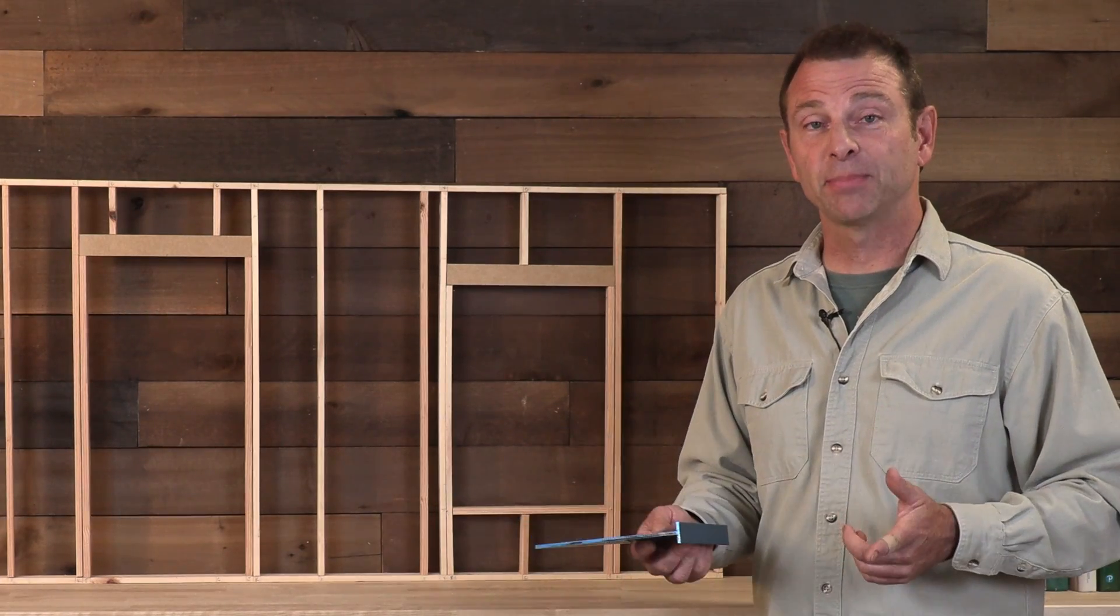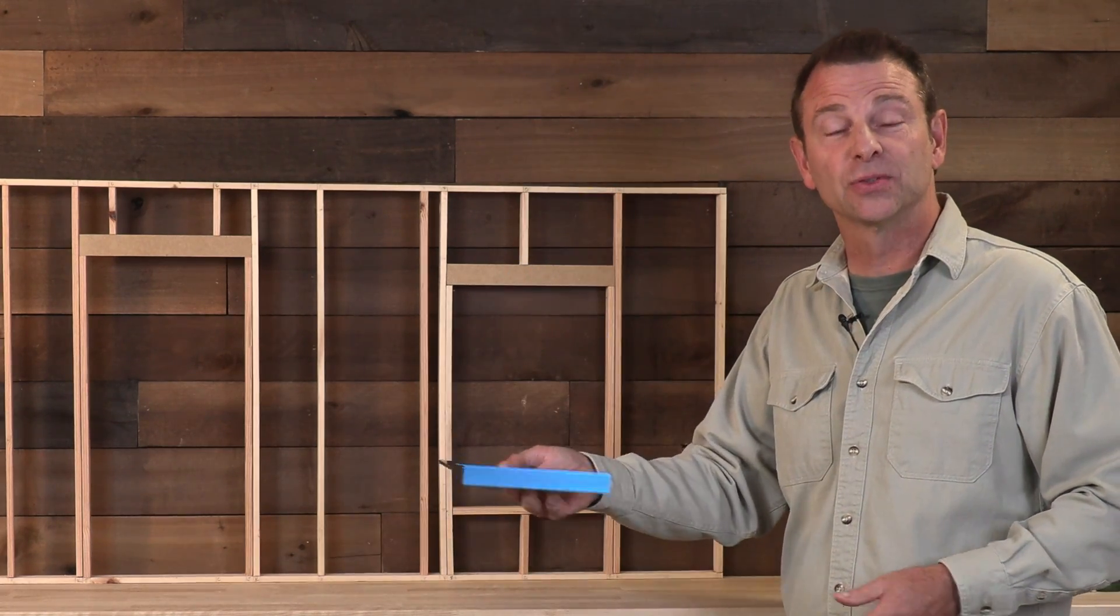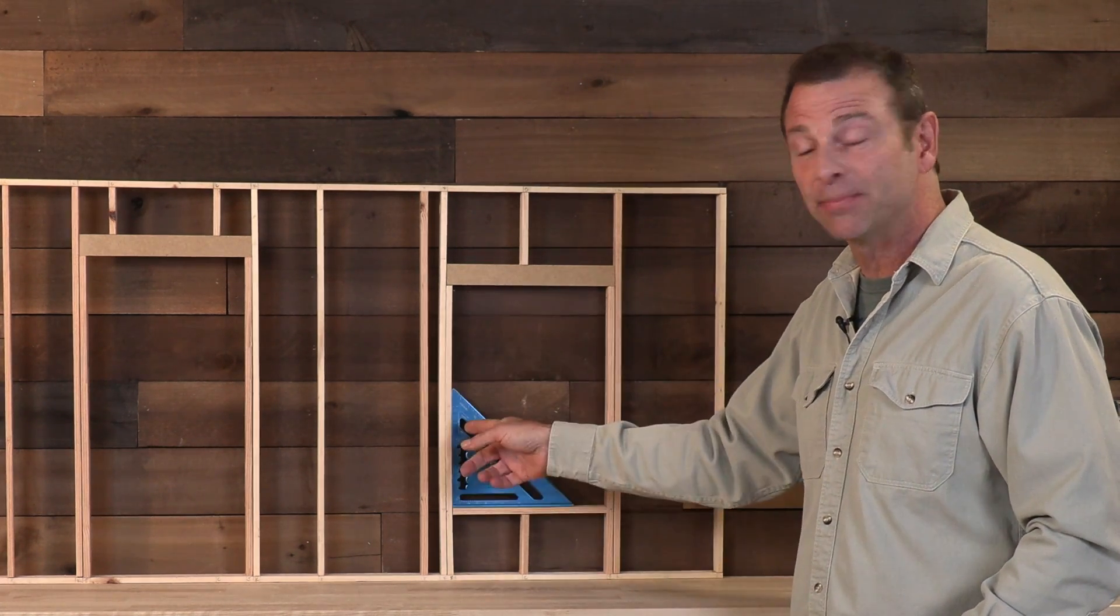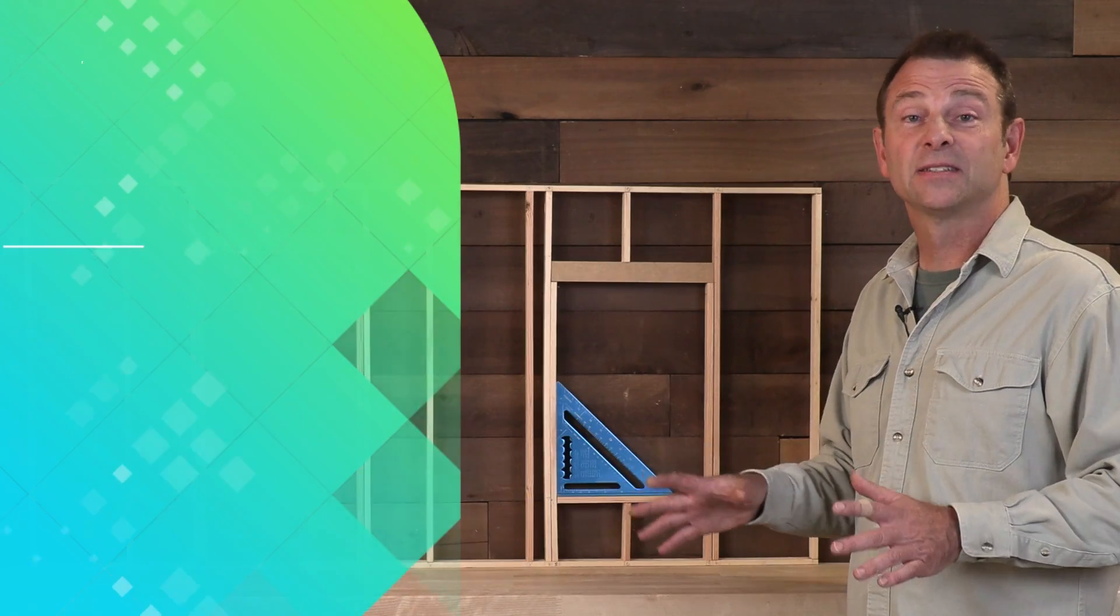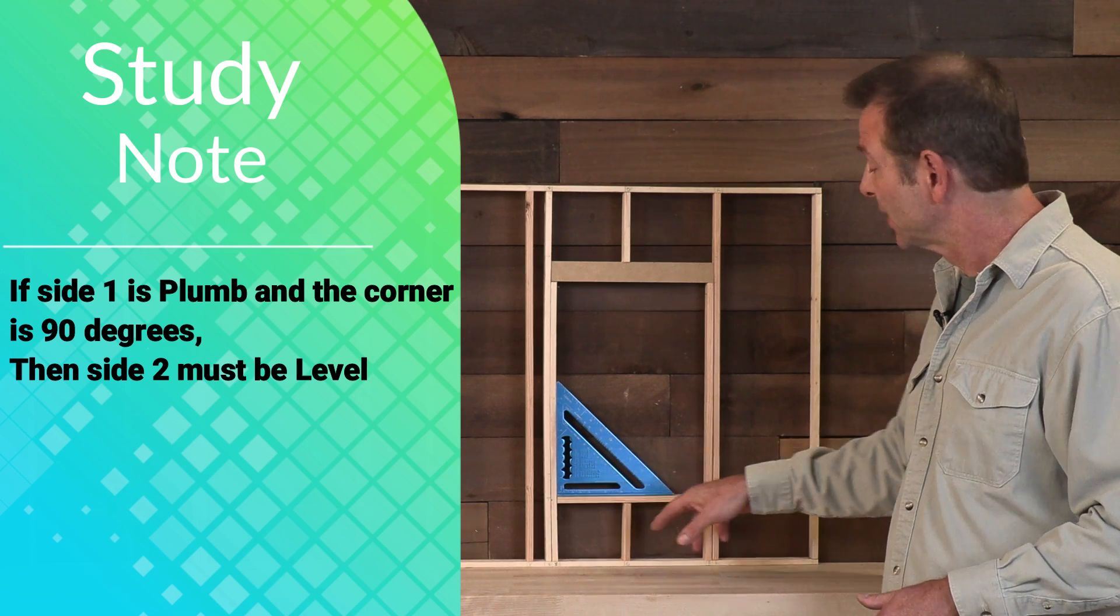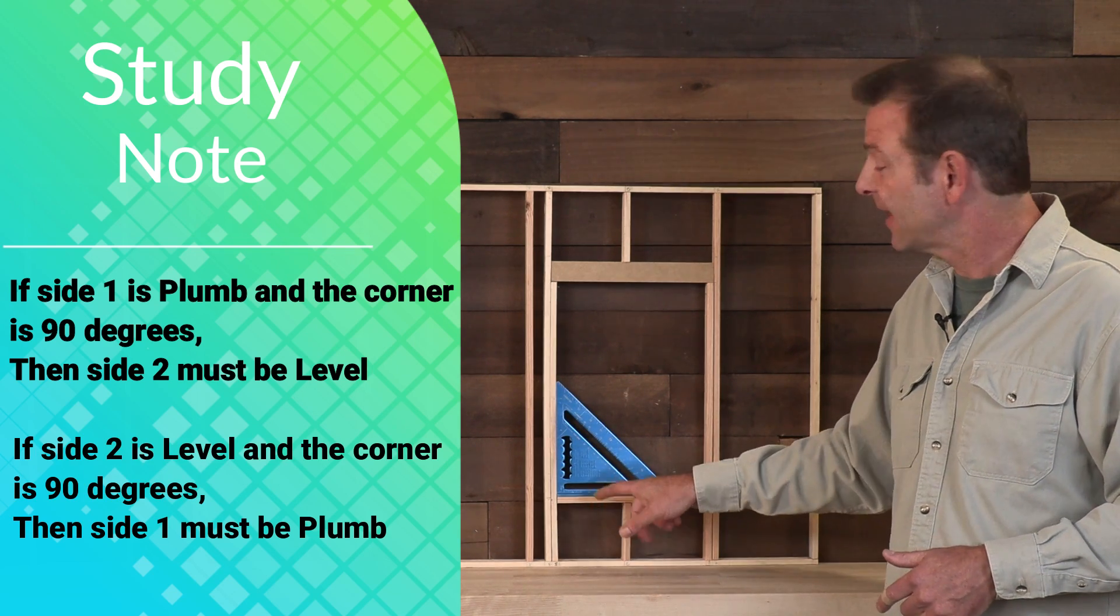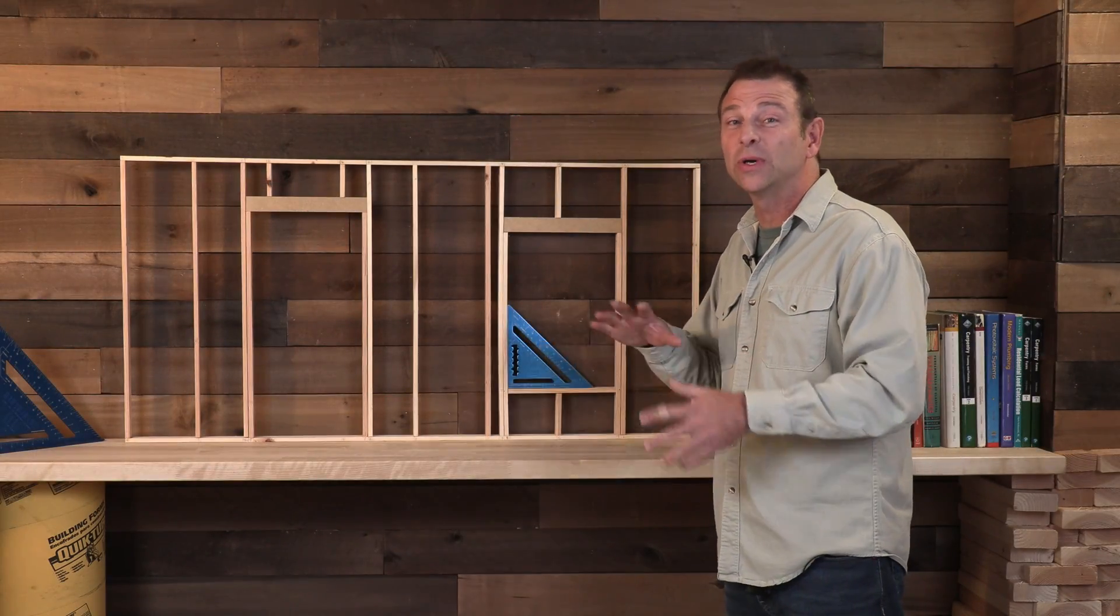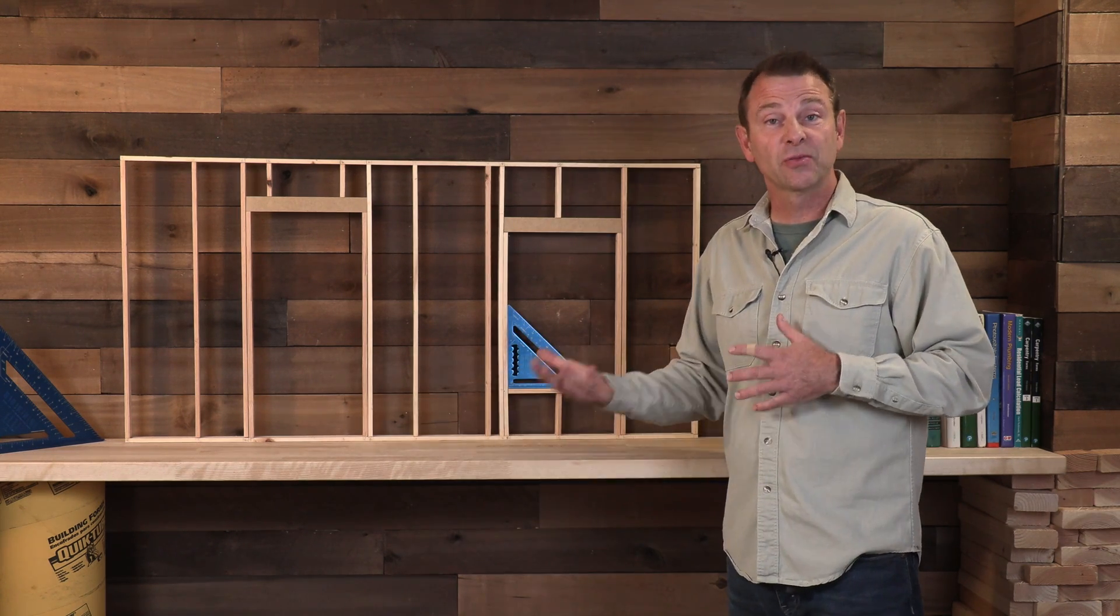So if I didn't have a level, I could use a plumb bob to figure out a perfectly vertical line, say this edge of this rough opening. I could use my angle tool to determine 90 degrees, and I would know, based on this line being plumb and this 90 degree angle, I would know that this line was perfectly level. This is a certainty. We know that if this line is perfectly vertical or plumb and that this is 90 degrees, this line here has to be level. On the other side, if we know this line is perfectly level and this is 90 degrees, this line has to be plumb. So a little secret here, what we just did was geometry.